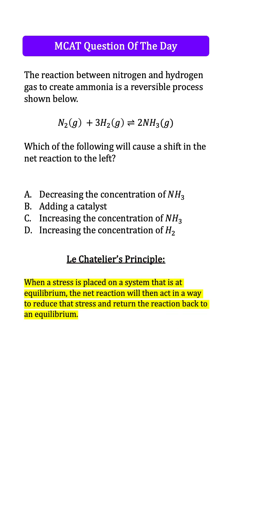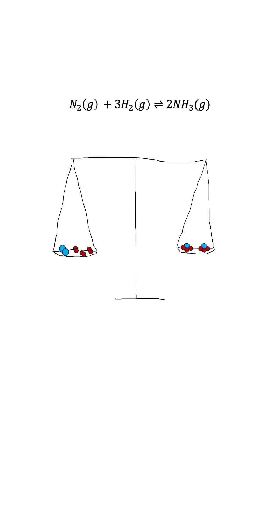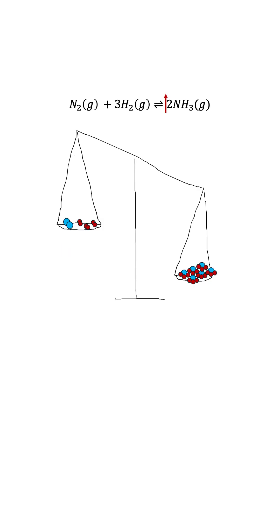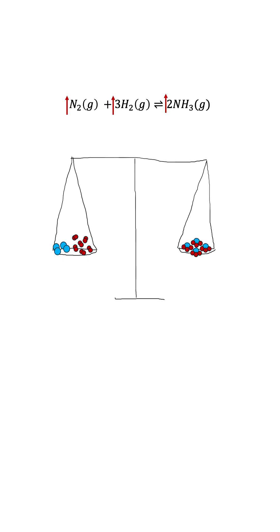The principle states that when a stress is placed on a system that is at equilibrium, the net reaction will act in a way to reduce that stress and return the reaction back to equilibrium. You can visualize the principle as a balancing scale or a seesaw — adding concentration on one side will force the reaction to proceed to create more of the other side until everything is balanced again.